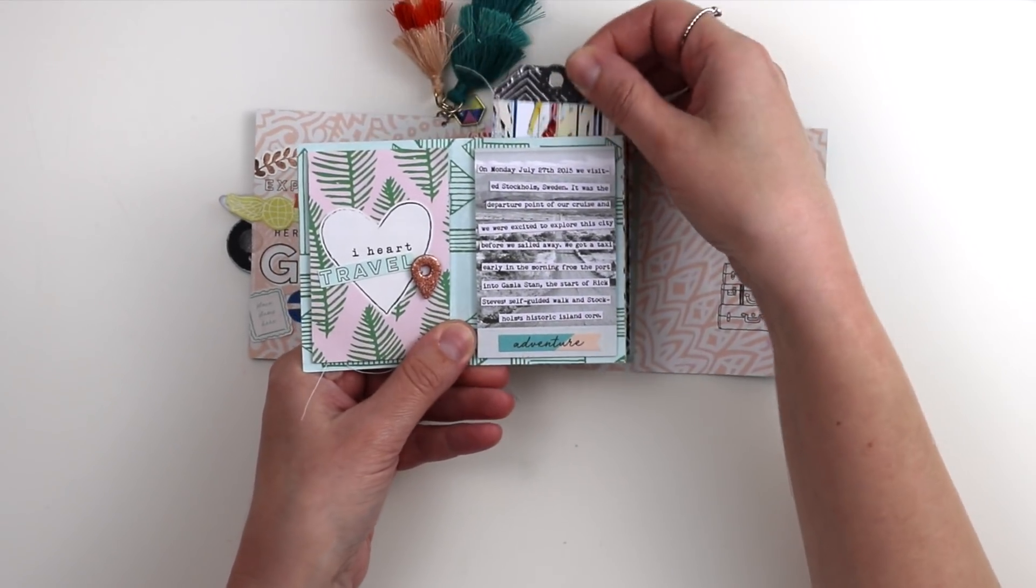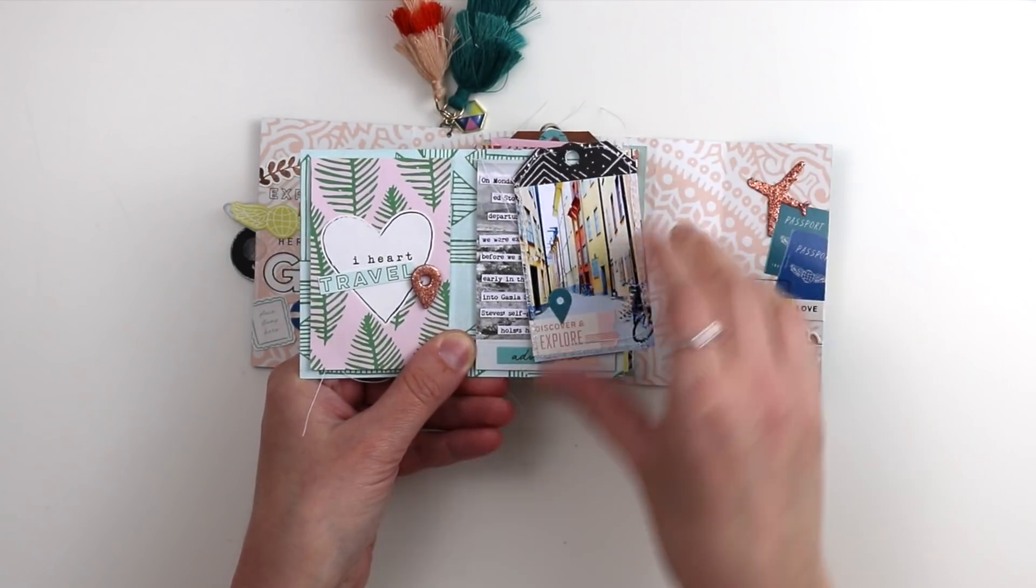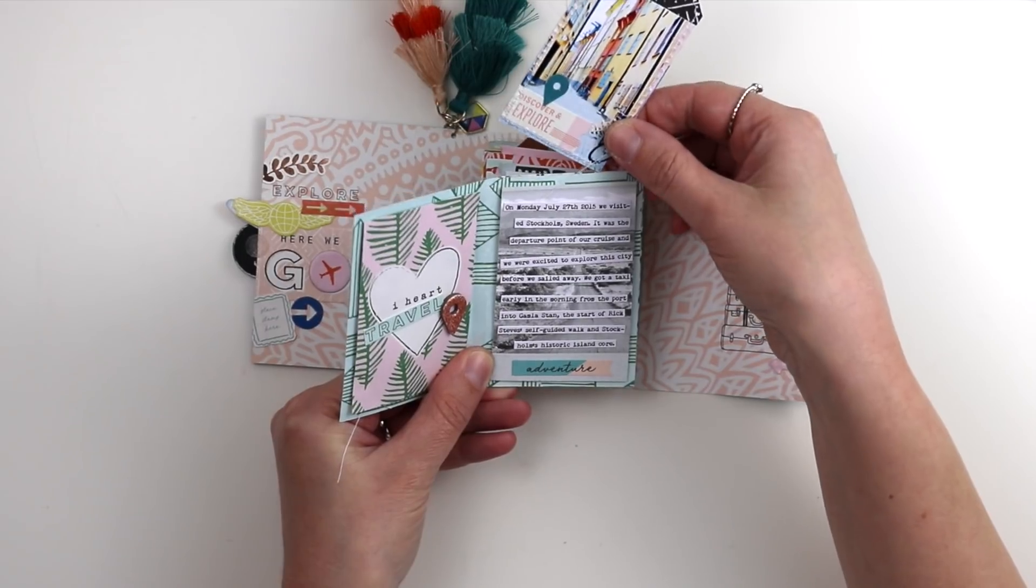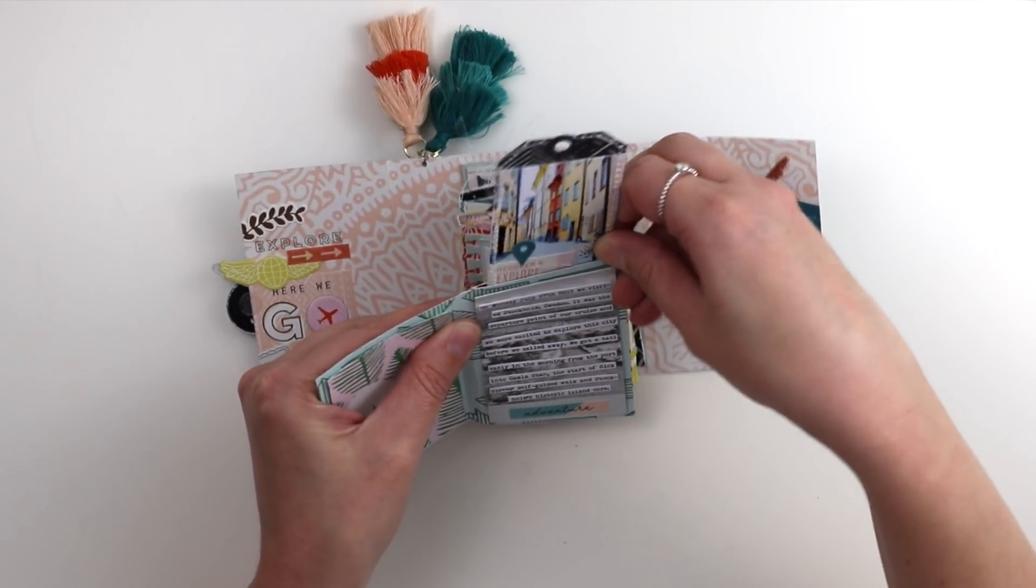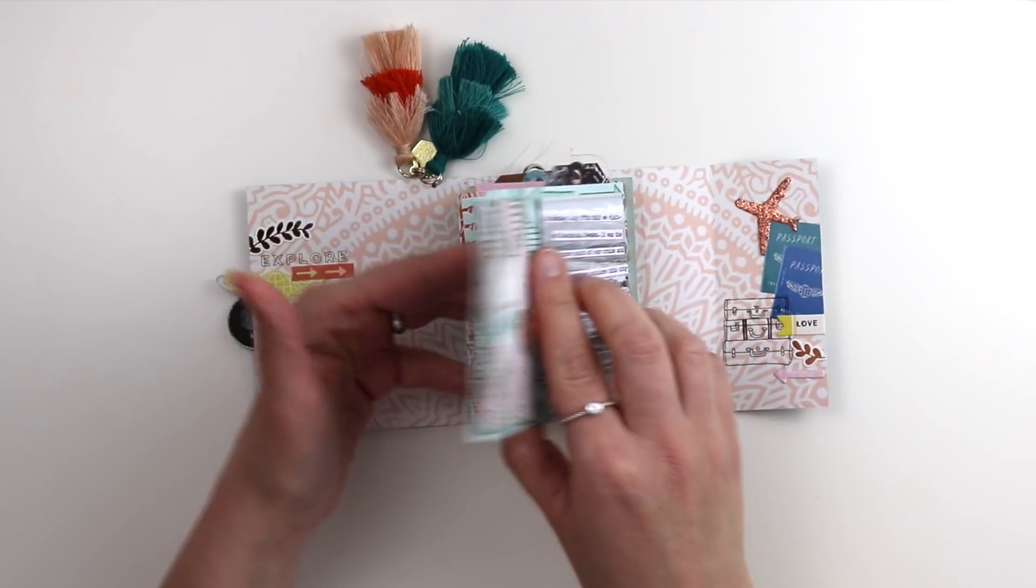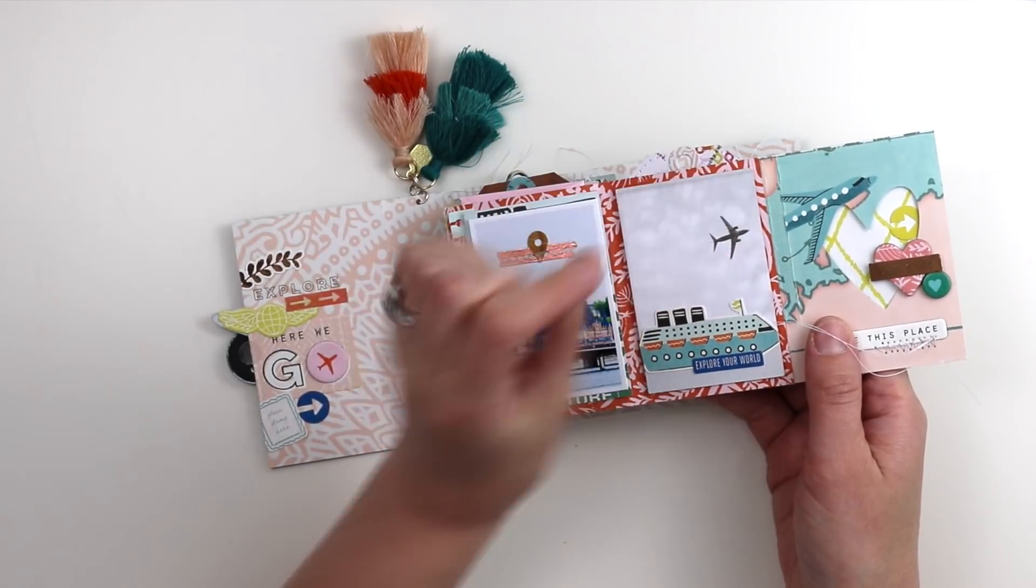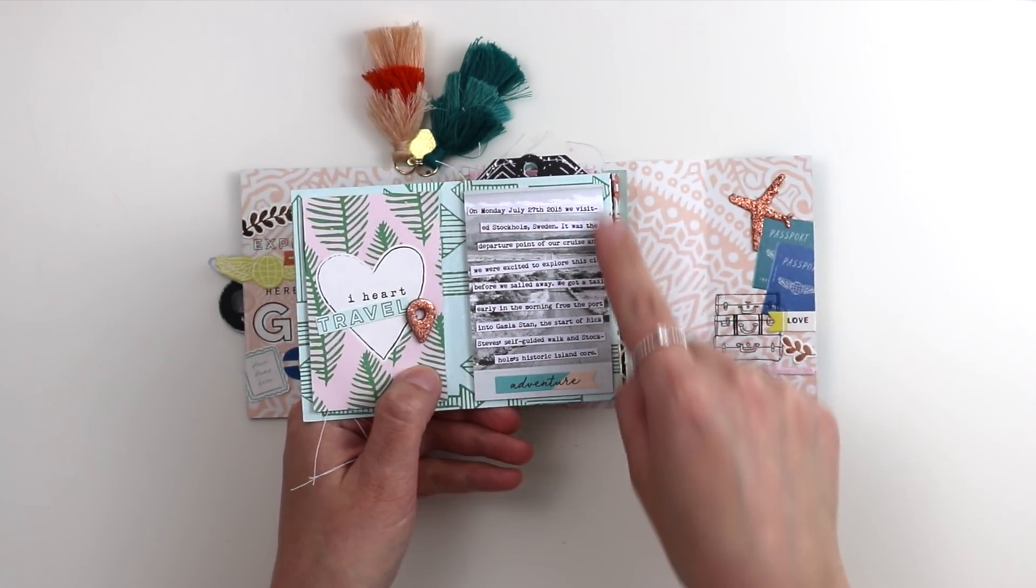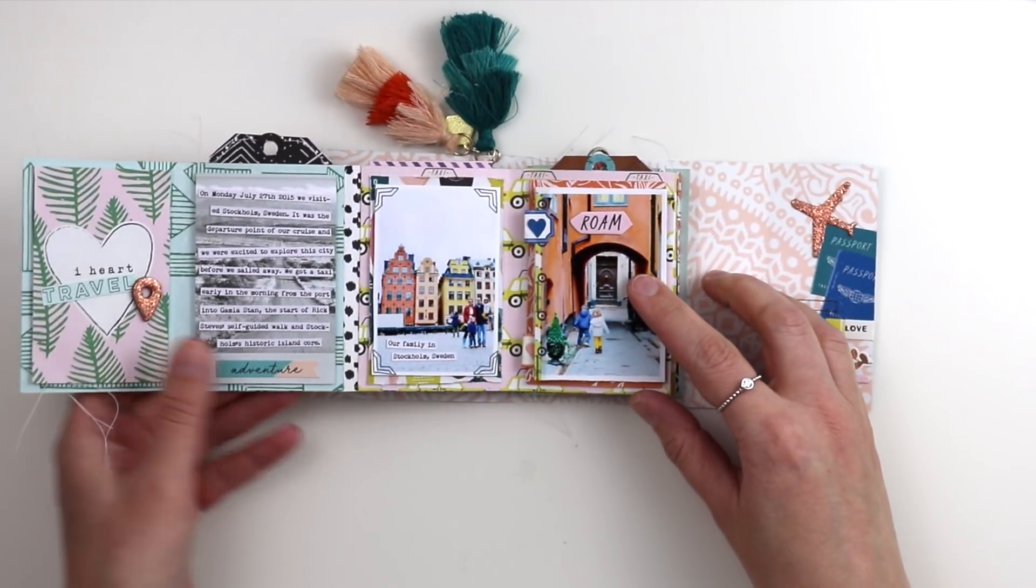I typed and printed journaling straight from my blog and here's the pocket. So in every pocket I added a tag or an envelope. They're double sided. It's a great place to add extra photos. Also machine stitching because I love that homespun feel that the dangling threads add. I created the pockets by placing adhesive only on the left, right, and bottom edges when I was adhering all the pages together and that's how you create the pockets.